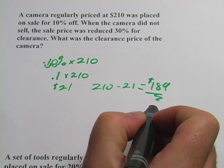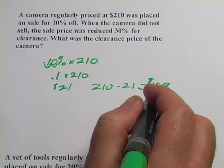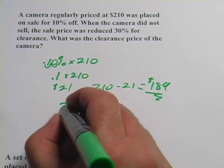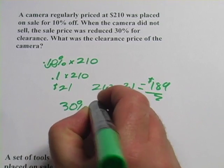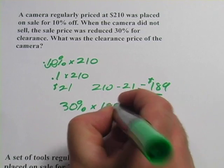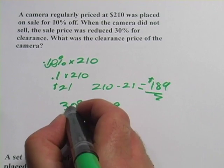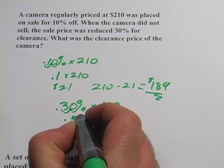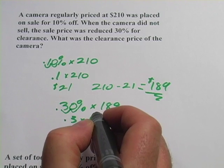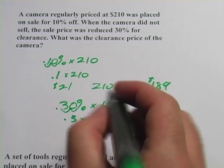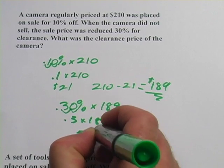Now we use that to figure out what the clearance price is. We're going to take 30% off of that. So what's 30% of, or multiply, 189? Well, we'll move our decimal point over, so we get .3 times 189, and crank that out on the calculator, and you should get $56.70.